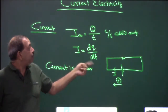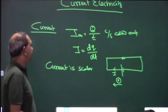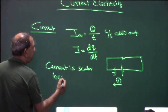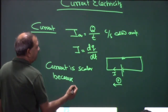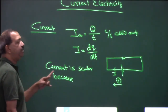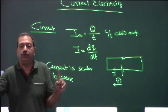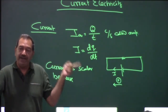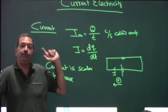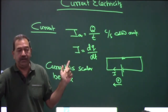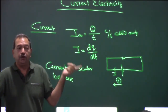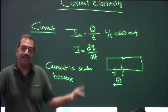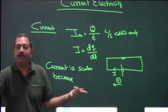But we cannot treat current as a vector because to define a vector quantity, two things are necessary: it must have direction, and it must follow the vector law of addition. Any quantity that has direction but follows the algebraic law of addition is called a scalar.